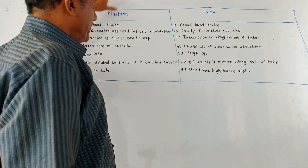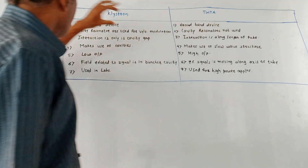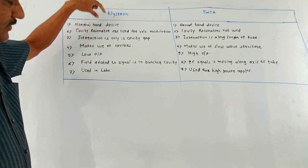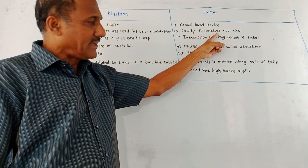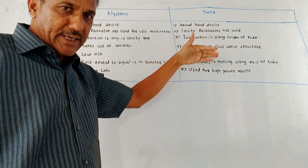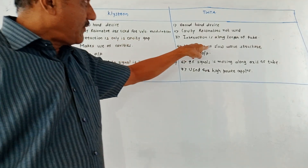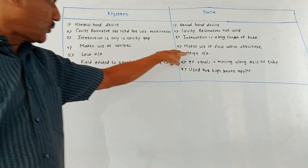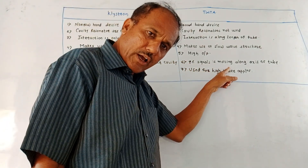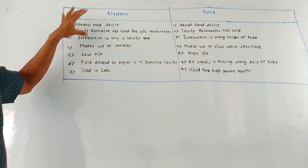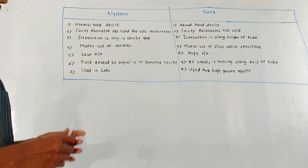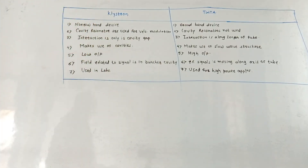Now let us discuss the comparison between Klystron and TWTA (travelling wave tube amplifier). Klystron is a narrowband device, whereas TWTA is a broadband device. In the Klystron, cavity resonators are used for velocity modulation, whereas in TWTA cavity resonators are not used. Interaction in Klystron is only in the cavity gap, whereas in TWTA interaction takes place along the entire length of the tube. Klystron makes use of cavities whereas TWTA makes use of slow wave structure. Output is low for Klystron and high for TWTA. In Klystron the RF signal field is in the buncher cavity, whereas in TWTA the RF signal moves along the entire axis of the tube. Klystrons are mainly used in laboratories, whereas TWTAs are used for high power applications like radar systems. That's it for the quick revision session of this unit. Thank you, thanks a lot for watching this video.